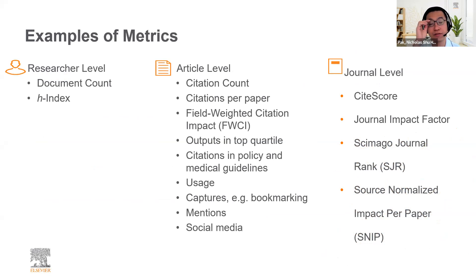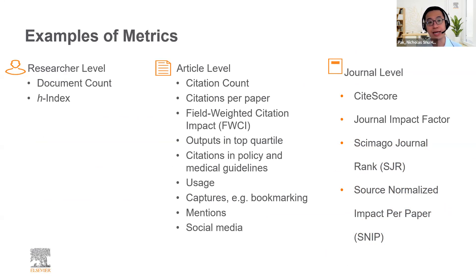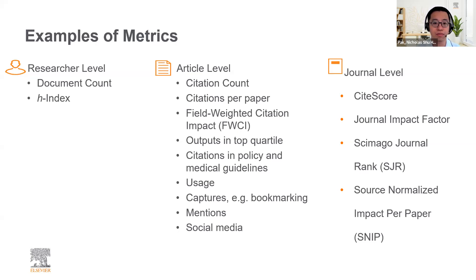People always say there are so many metrics on Scopus and ask if it's too complicated. My job is to make it simpler to understand. There are metrics at different levels. At the author or researcher level, we have document count where you're able to see your output, and we have the H-index. At the article level, we can see citation count, citations per paper, field-weighted citation impact, outputs in the top quartile of journals, citations in policy and medical guidelines, and you can track usage, captures, mentions, and social media — what we call PlumX and ALT metrics.